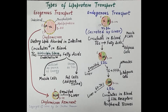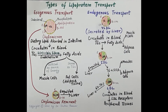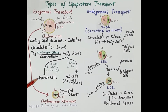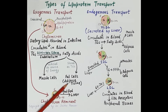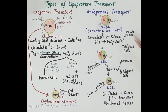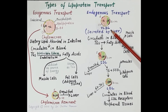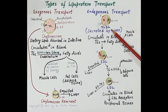These chylomicron remnants are engulfed by the liver. This is how chylomicrons circulate in the body — providing energy to muscle cells and triglycerides to adipose tissue. Now let's talk about endogenous transport.